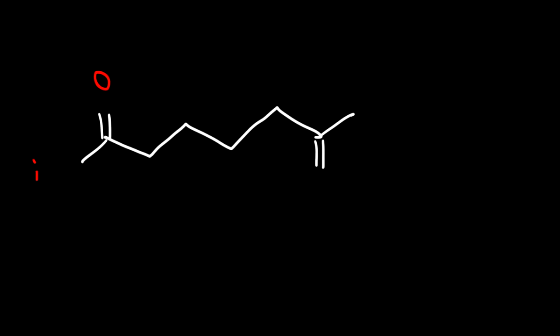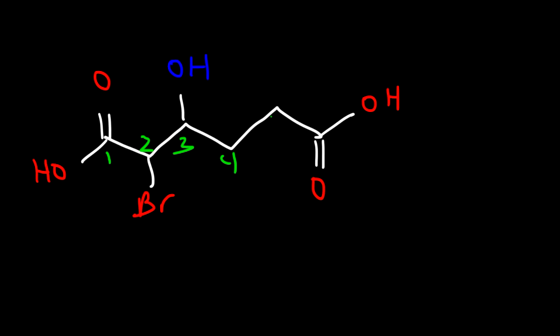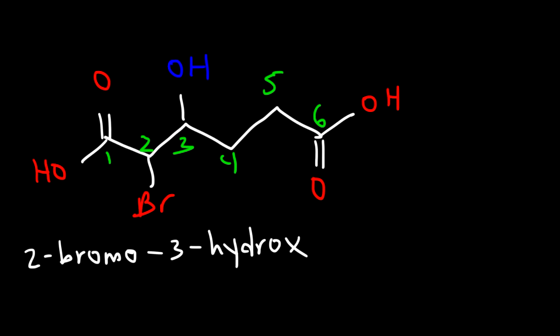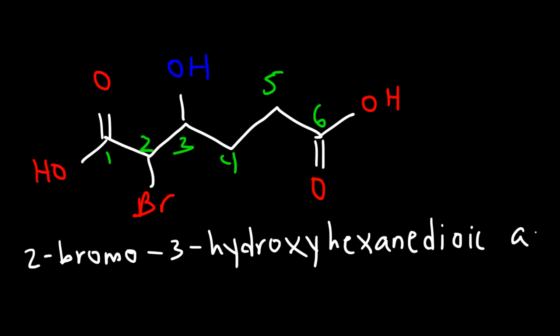So here's another one that we could try. Feel free to pause the video and work on this example. This time we're going to have a bromine atom attached to it and also an OH group. Go ahead and name the molecule. Since the substituents are on the left side, we're going to make this one carbon 1. You need to number it in such a way that the substituents have the lower numbers. We need to put it in alphabetical order, so bromo will come before the hydroxy group. So this is going to be 2-bromo and then 3-hydroxy. We have a 6-carbon chain so this is hexane dioic acid. So that's 2-bromo-3-hydroxyhexane dioic acid.